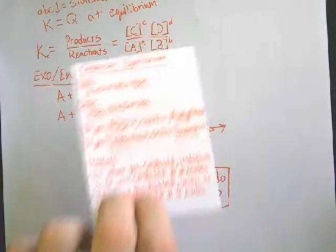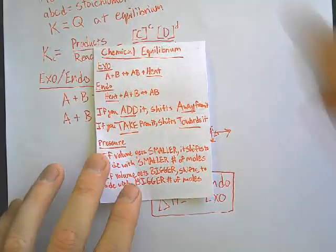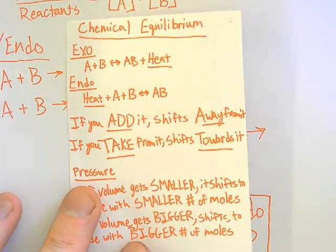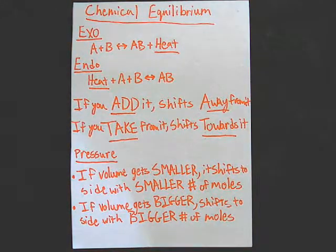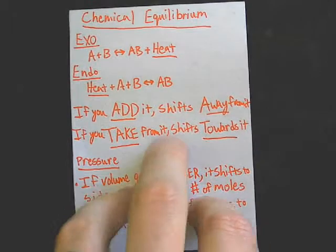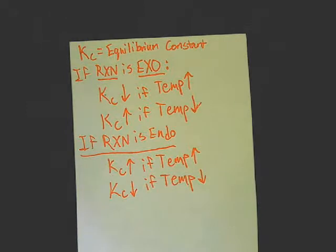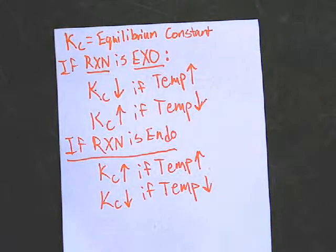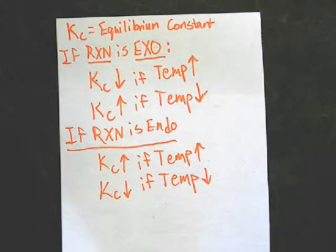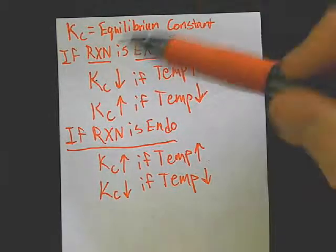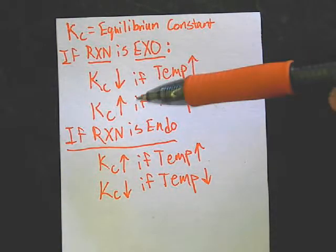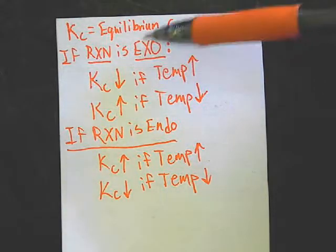If you have your card, go ahead and pull that out — dealing with equilibrium. Go ahead and flip it over. We're going to add some stuff to the back. At the top I want you to put Kc equals equilibrium constant.